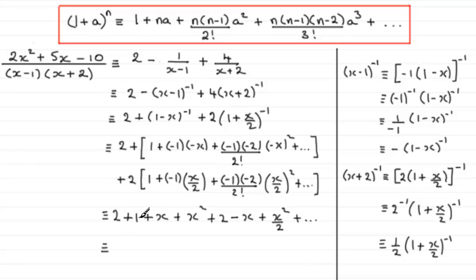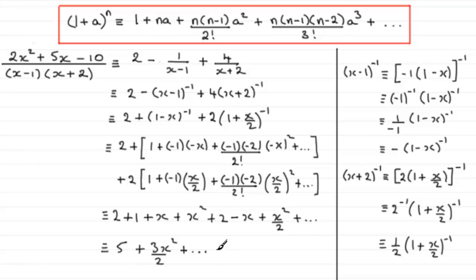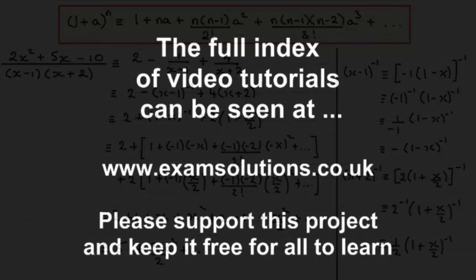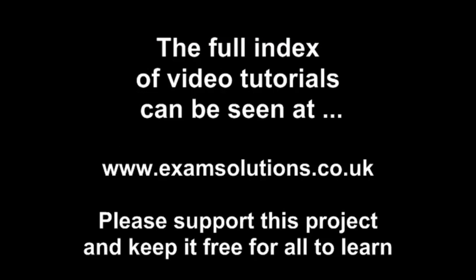Grouping all terms together: the constants 2 plus 1 plus 2 give 5. For the x terms, plus x minus x cancels to zero. For the x squared terms, x squared plus half x squared gives 3x squared over 2. So the final expansion up to the term in x squared is 5 plus 3x²/2, plus and so on.